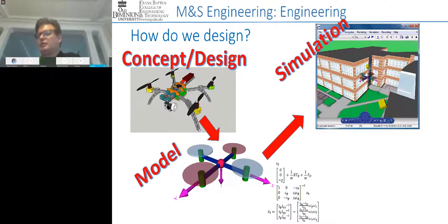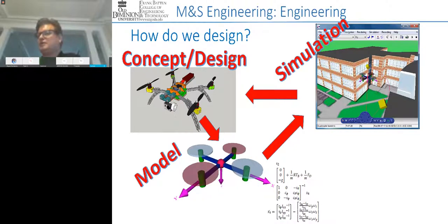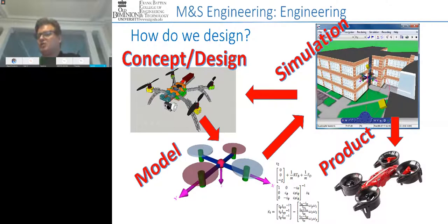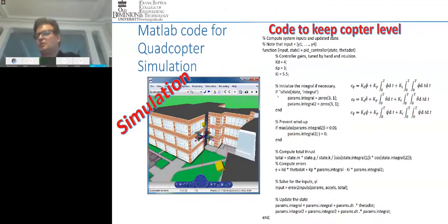You might ask, are we done? Typically, when we look at the implementation the first time, there may be some bugs or inadequacies that we find in the verification and validation stage. This motivates us to return to our concept or original idea and perhaps refine the model once more in an iterative fashion, so that finally we have something akin to the physical system that we're trying to emulate.